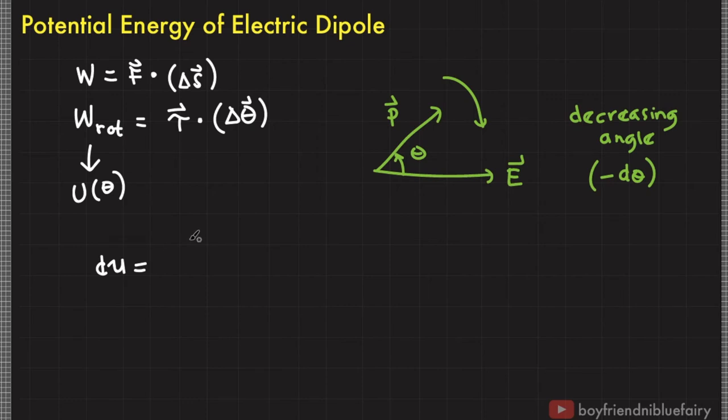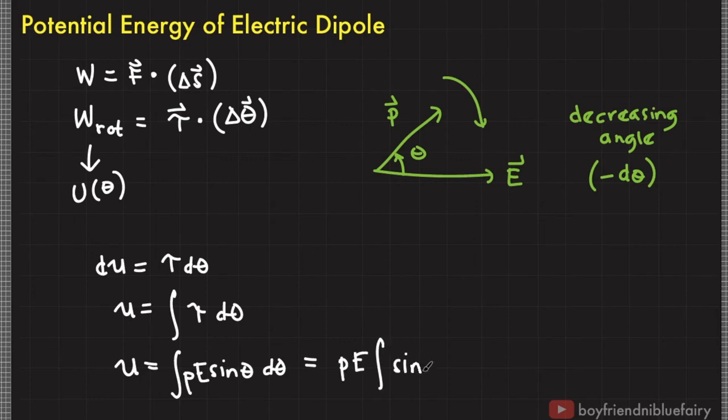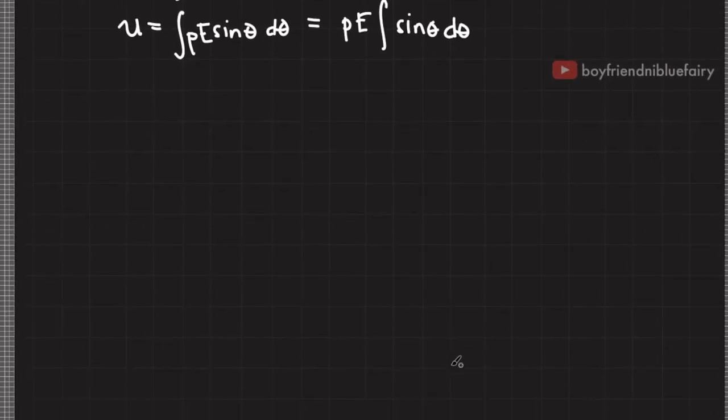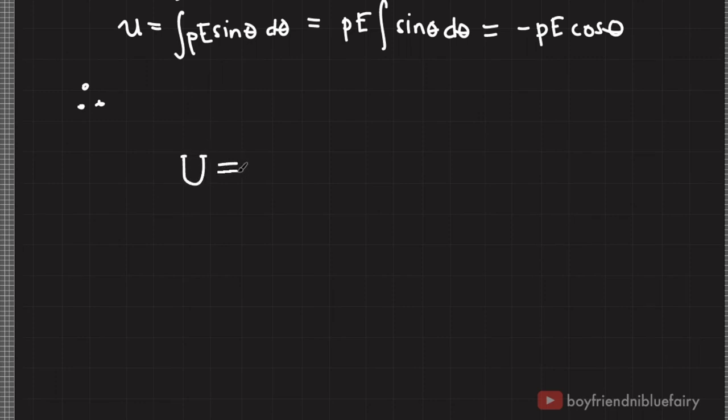Writing down the potential energy, we have torque multiplied to d theta. The magnitude of torque is P e sine theta. In vector form, we have negative of dipole moment dotted to the external electric field.